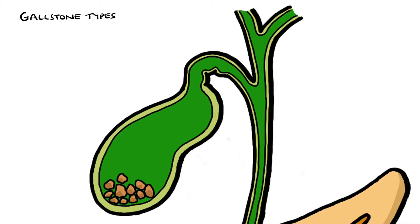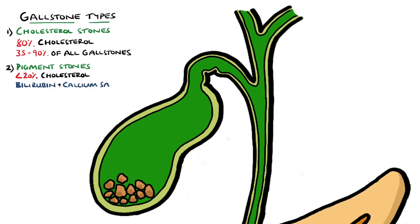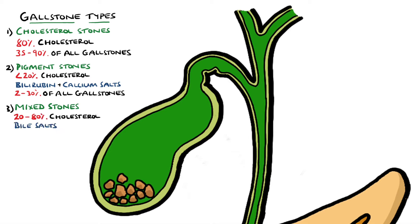There are three main types of stone. Cholesterol stones, which are made up of around 80% cholesterol and make up 35-90% of all gallstones. Pigment stones are composed mostly of bilirubin and calcium salts, with less than 20% cholesterol content, making up between 2-30% of all stones. Then we have mixed stones, which are 20-80% cholesterol with other bile salt components, making up between 4-20% of stones.